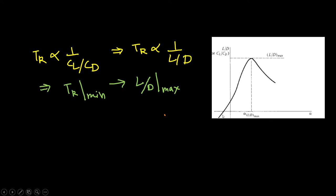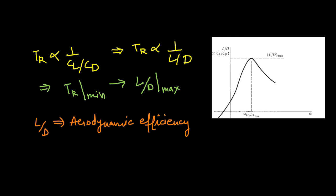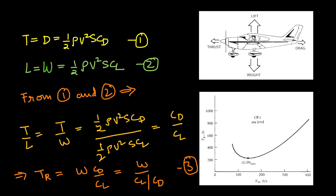As seen from the figure, at different angles of attack the L/D or CL/CD ratio changes, and at some angle of attack this L/D ratio reaches its maximum value and then decreases again. This L/D ratio is also known as aerodynamic efficiency, because it represents the efficiency of the aircraft. The angle of attack at which L/D reaches its maximum is generally about 2 to 5 degrees for normal subsonic aircraft.